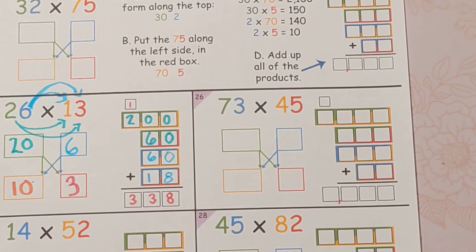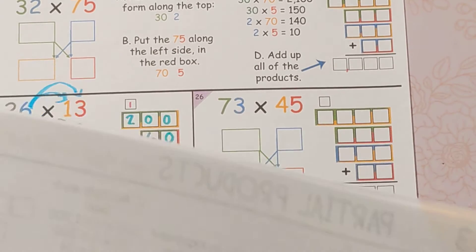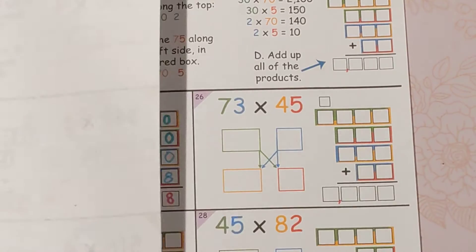Hey everyone, this is Mrs. Clark and we're learning how to do partial products today. We're doing 73 times 45, two digits times two digits.